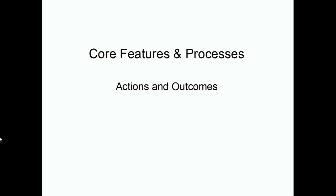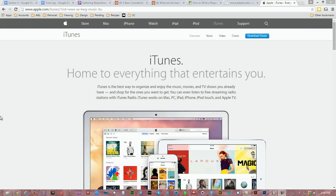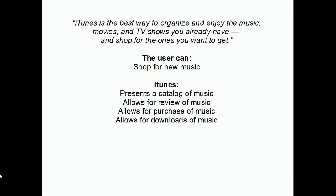As an example, let's look at the iTunes app. Apple says iTunes is the best way to organize and enjoy music, movies, and TV shows you already have, and shop for the ones you want to get. So let's translate that into Available Actions and Expected Outcomes, and then into Core Features and Processes. From this statement, we know that the user can shop for new music. This is a core feature, and certain processes must be present to support it.